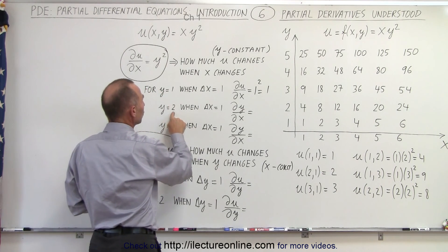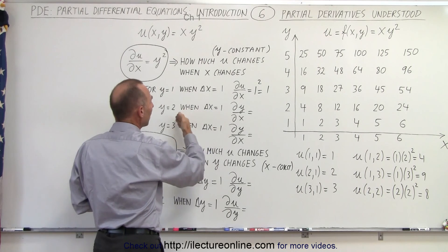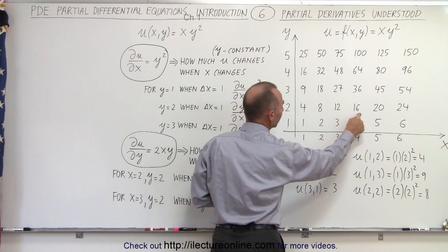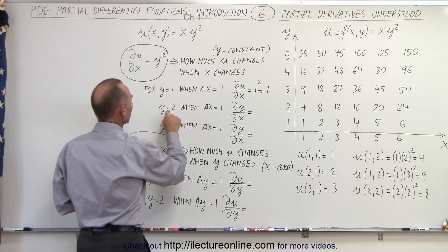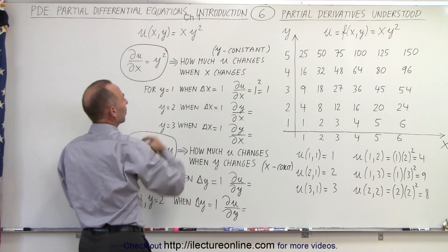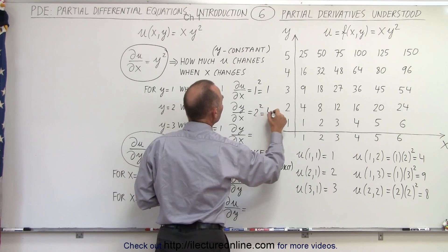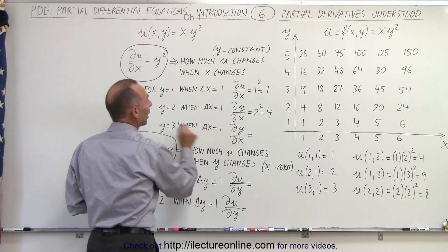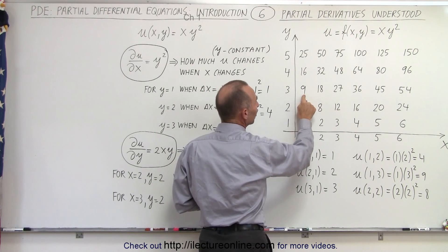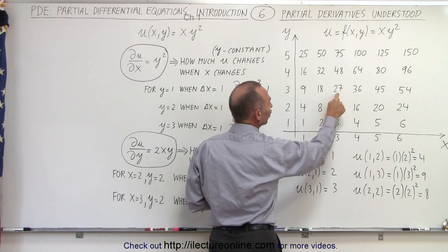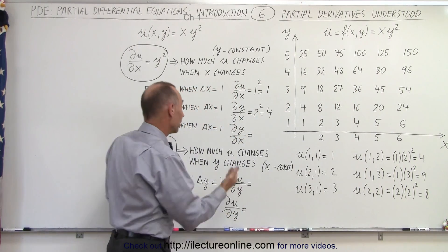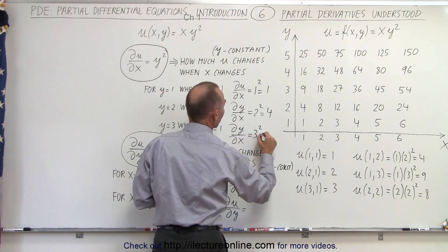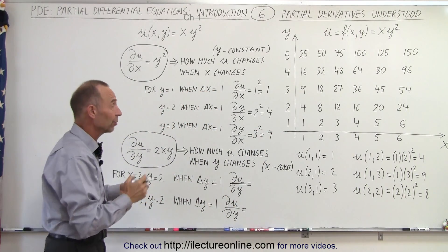What if y equals 2 and we change x by 1? Notice the function changes by 4 — from 4 to 8, from 8 to 12. That's confirmed since ∂u/∂x = y squared = 2 squared = 4. Similarly, when y equals 3 and we change x by 1, u changes by 9 — from 9 to 18, from 18 to 27, from 27 to 36. And indeed y squared = 3 squared = 9. So it all bears out.